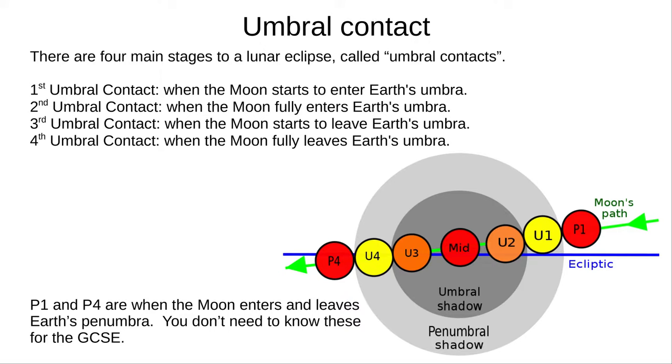We'll look at umbral contacts, labelled U in the diagram. You don't need to know about penumbral contacts, labelled P, for the GCSE. First umbral contact, or U1, is when the Moon starts to enter Earth's umbra. Second umbral contact, U2, is when the Moon has fully entered Earth's umbra.